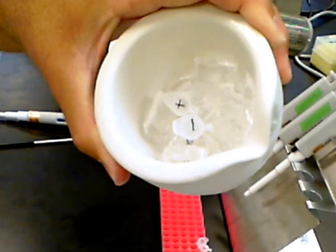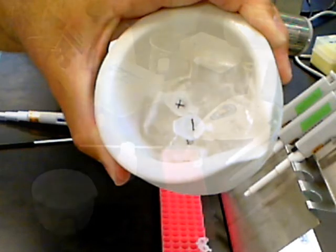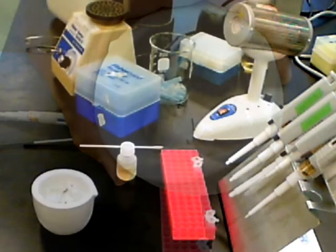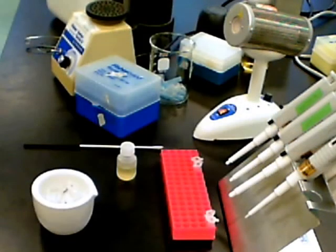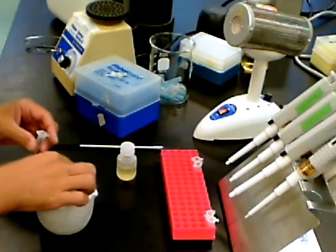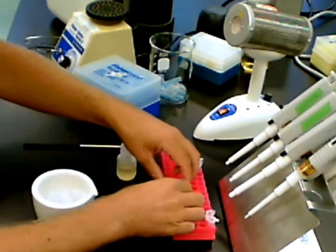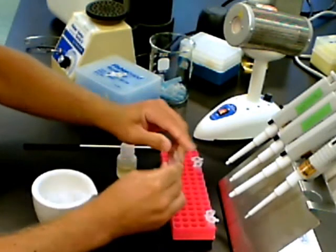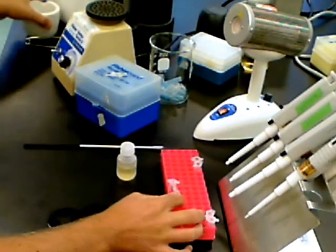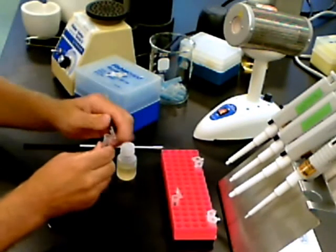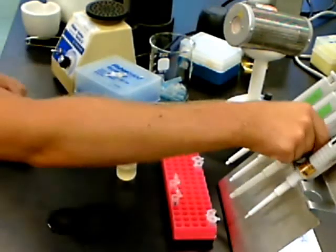Afterwards, we're going to return both tubes to the ice and incubate them for an additional two minutes. And then using a sterile pipette, we're going to add 250 microliters of recovery medium to each tube and mix them well.